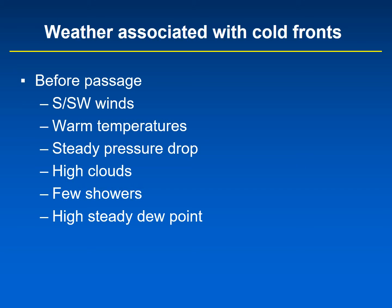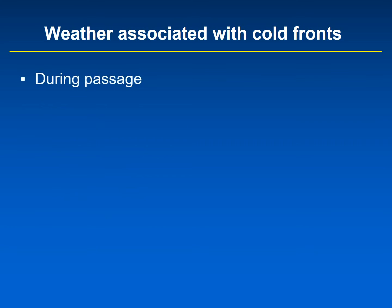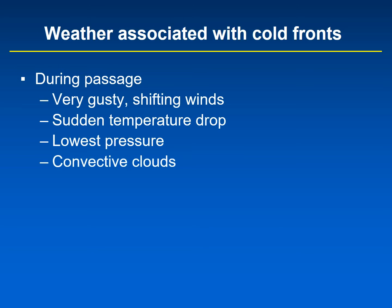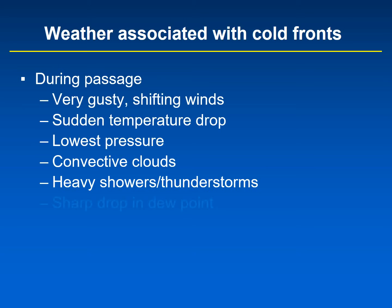As the cold front passes an area, the winds pick up, become gusty, and shift direction. Temperatures suddenly drop abruptly. Pressure bottoms out as the cold front passes. There are convective clouds such as cumulus congestus and cumulonimbus. There are heavy showers and thunderstorms — cold fronts are associated with heavy, showery precipitation. Dew points sharply drop. So not only are cold fronts associated with sudden drops in temperature, but sudden drops in dew point as well. As the cold front passes, the air is becoming colder and drier.